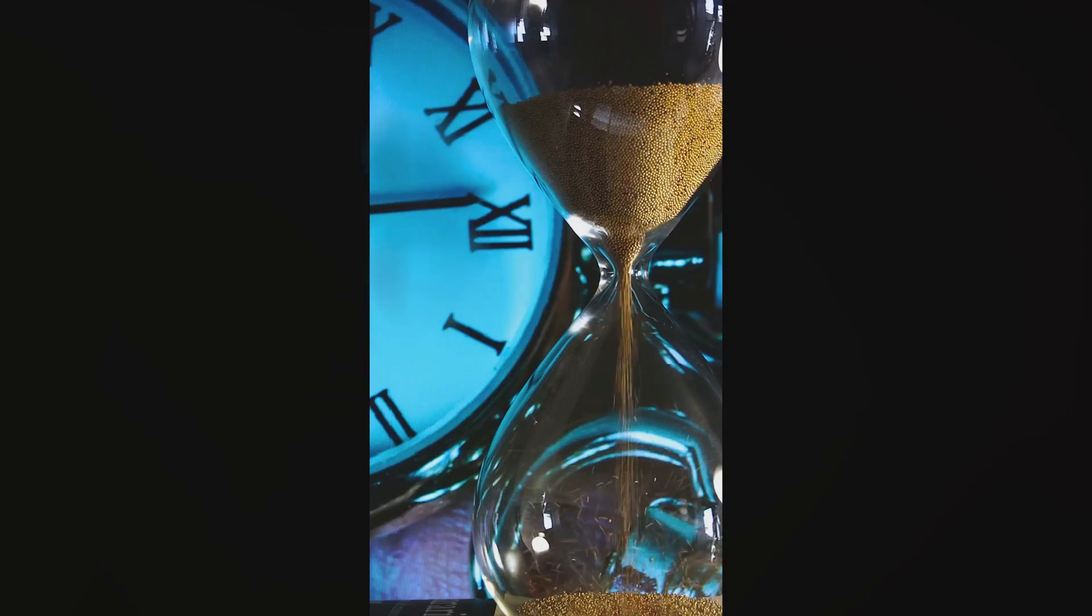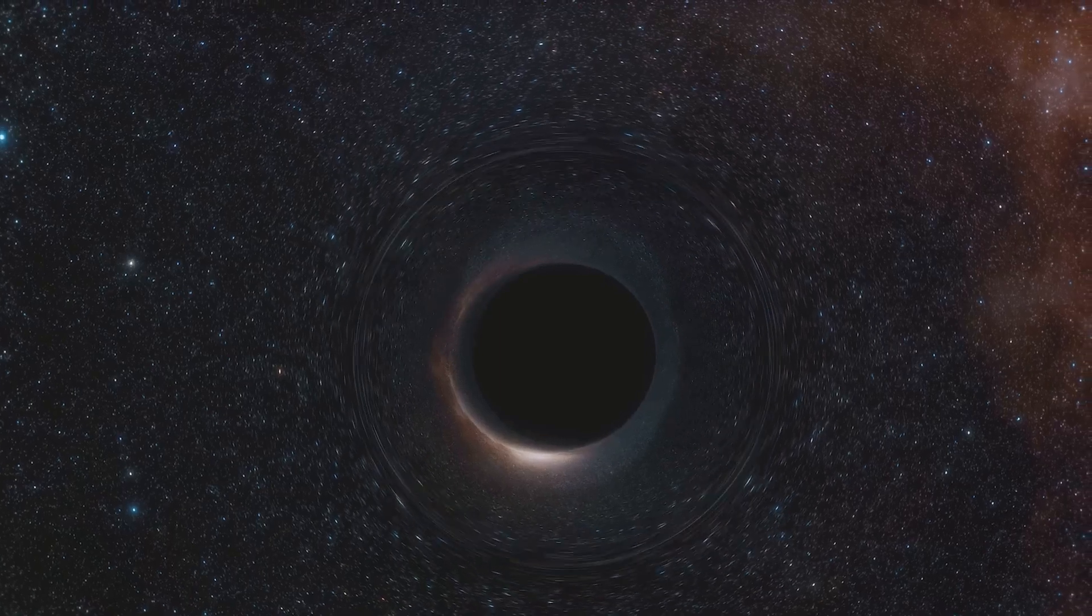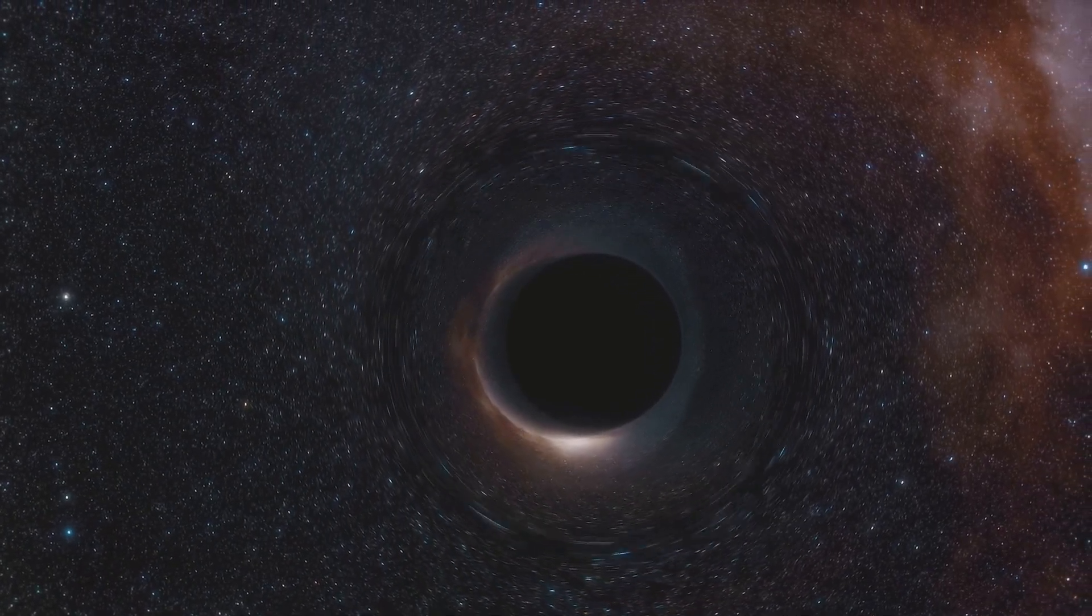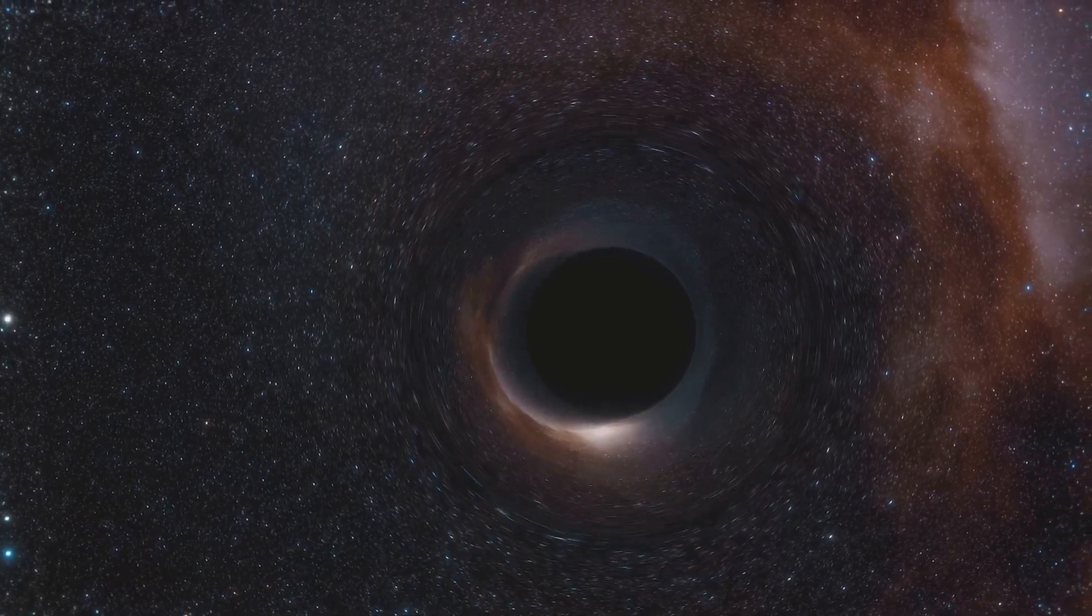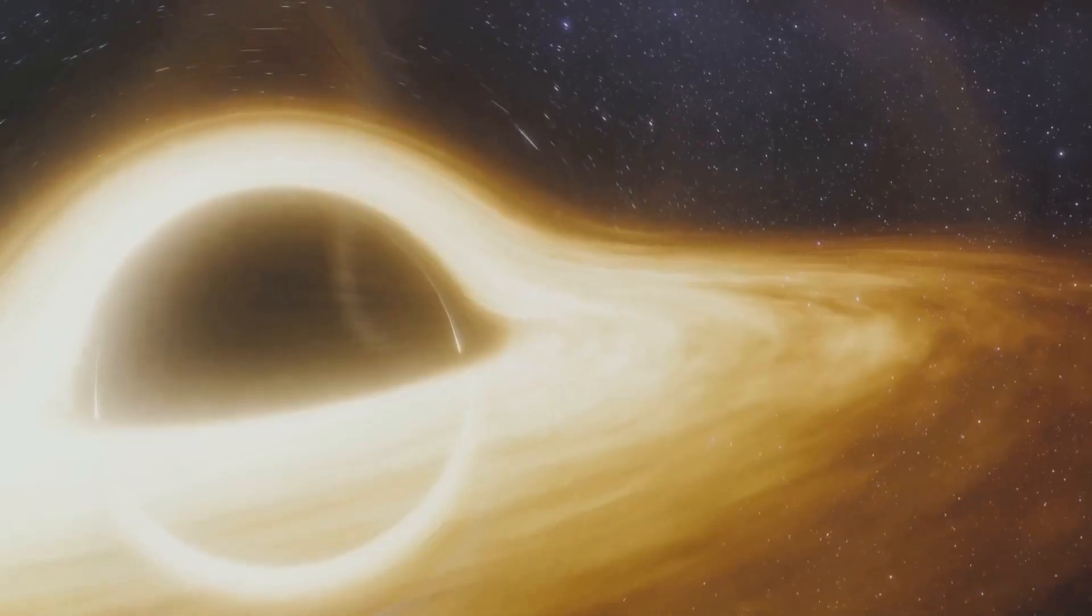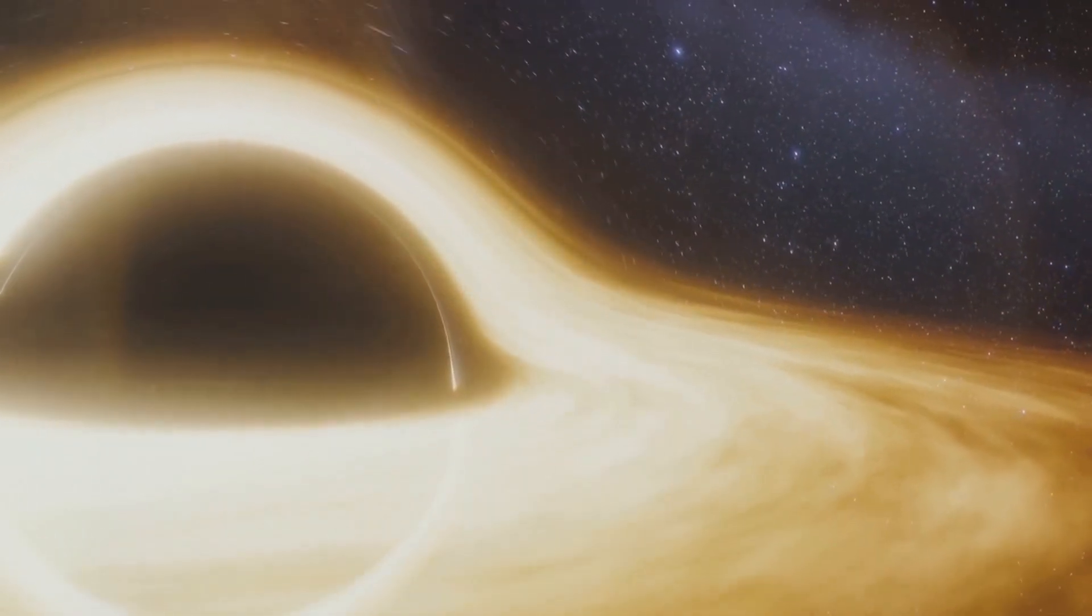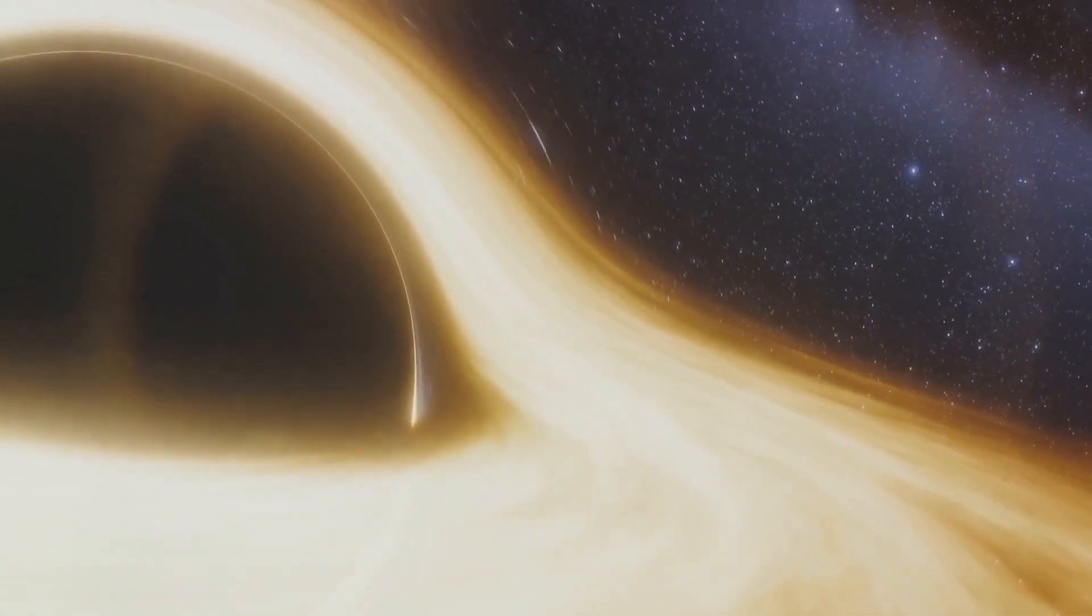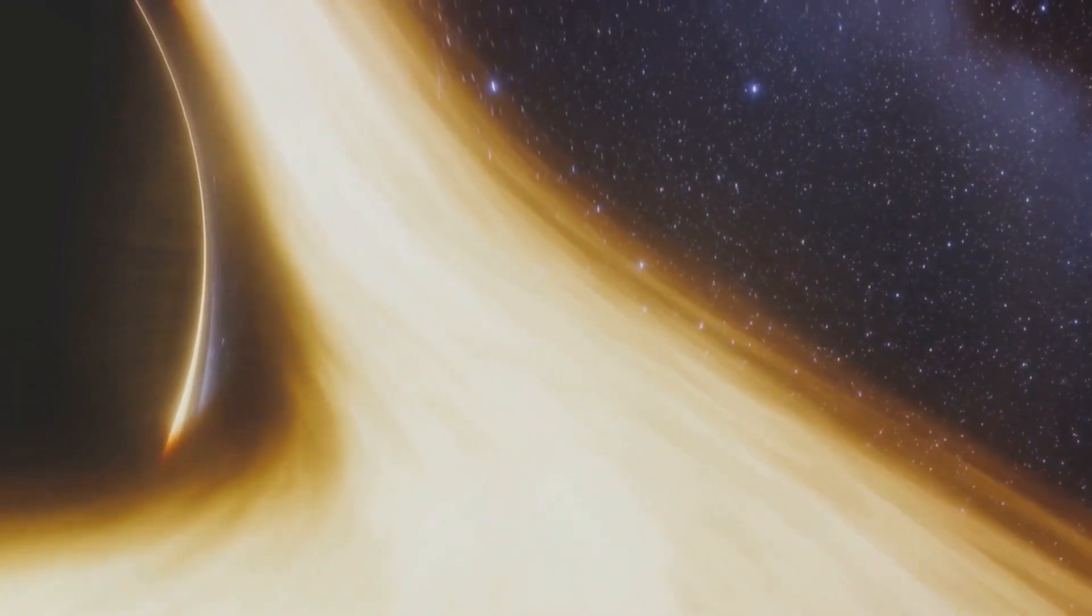But it's a scientific reality, a concept known as time dilation. Time dilation is a difference in the elapsed time, as measured by two observers, due to a relative velocity between them, or to a difference in gravitational potential between their locations. In simpler terms, time moves slower when it's near a significant source of gravity. That's right, the closer you are to a massive object, like a planet or a star, the slower time ticks away.